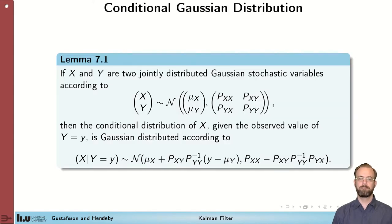Before we do the measurement update step, we'll review lemma 7.1, dealt with in a separate module. In that module we show that x and y, if they're jointly distributed Gaussian stochastic variables, we can get a really simple expression for the conditional distribution x given y. That's given by the expression here. We will use this in the measurement update derivation.